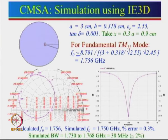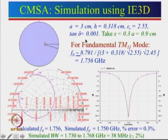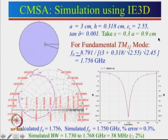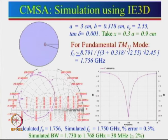A simulation has been done with A = 3 cm, h = 0.318 cm (1/8 inch), εr = 2.55, tan δ = 0.001 — a very low-loss dielectric substrate. Starting feed point x = 0.3a = 0.9 cm. For εeff = 2.45 (slightly less than εr = 2.55), we calculate the resonance frequency.